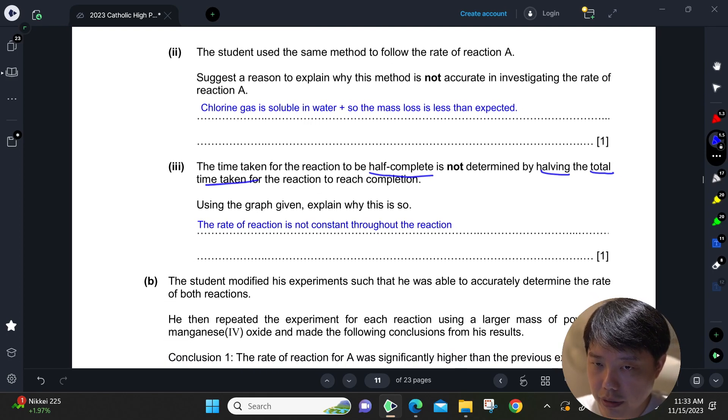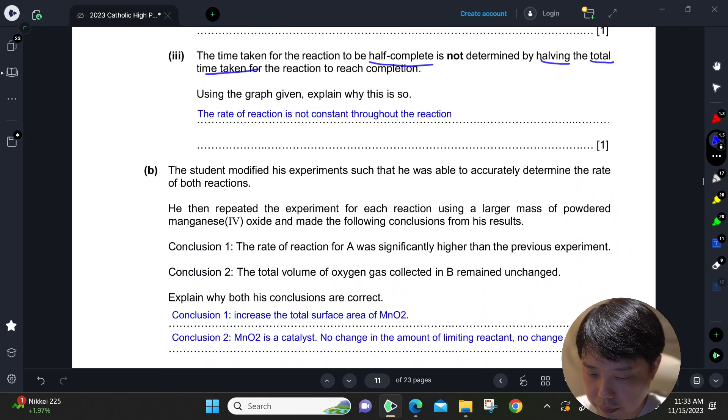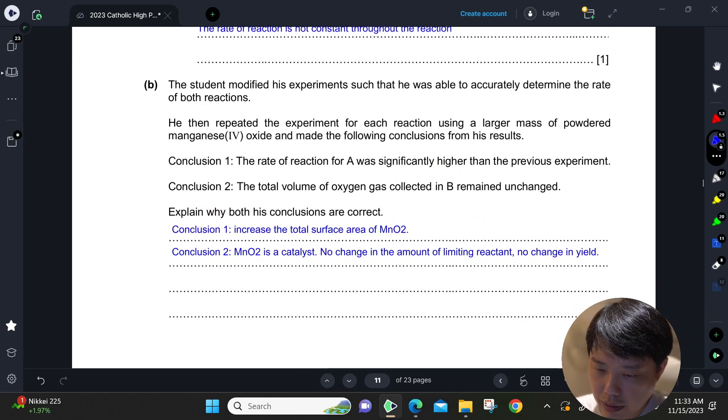For part B, the student modified his experiments such that he was able to accurately determine the rate of both reactions. He then repeated the experiment for each reaction using a larger mass of powdered manganese oxide and made the following conclusions from his results. Conclusion 1: The rate of reaction for A was significantly higher because there is an increase in total surface area.